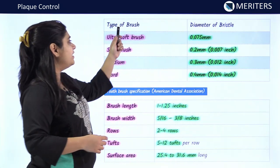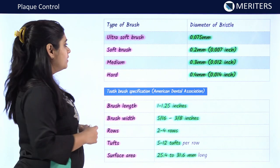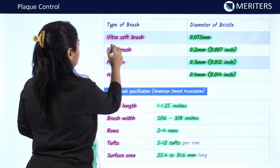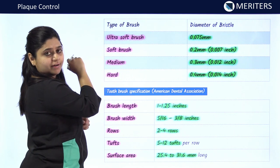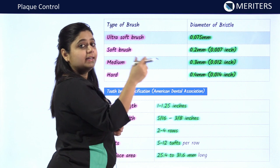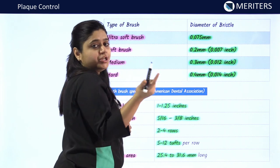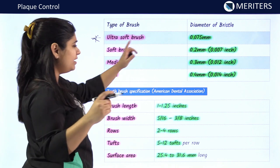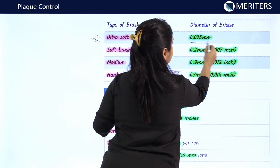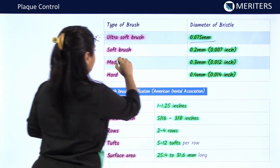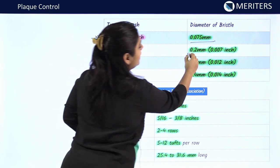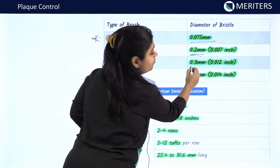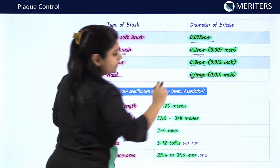Brushes are divided based on their diameter. As the diameter decreases, softness increases. The ultra-soft toothbrush has the least diameter of 0.075 mm. The soft brush has a diameter of 0.2 mm. Medium and hard bristle brushes have diameters of 0.3 mm and 0.4 mm respectively.